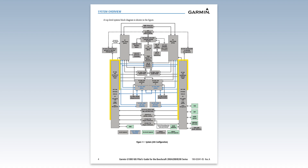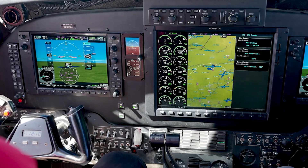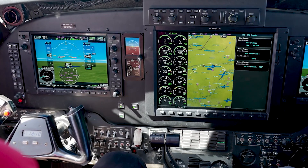One of the autothrottle system components is the Garmin Integrated Avionics Units, or GIAs. The GIAs receive engine data, AHARS, and AFCS inputs. They then interpret this information and send the appropriate commands to the autothrottle servos to move the power levers in accordance with flight director guidance as it relates to airspeed, attitude, and altitude. It can be helpful to think of the GIA as setting pitch and power to achieve the desired performance.